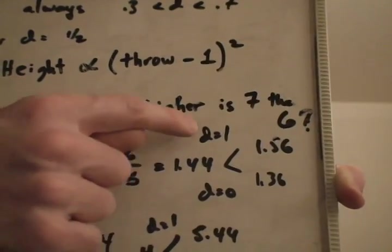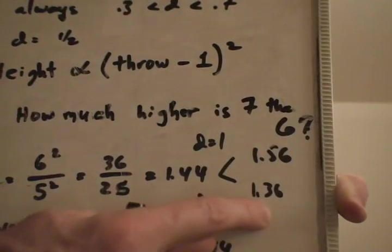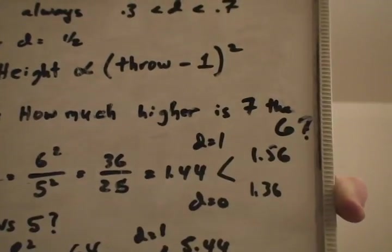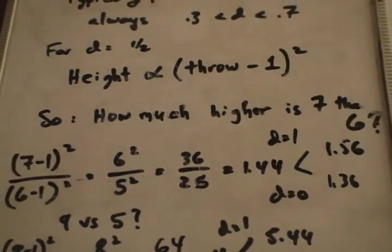That's for dwell of a half. For dwell of one, it's 1.56. For dwell of zero, it's 1.36. So it's definitely between these numbers and probably pretty close to 1.5 or something like that.